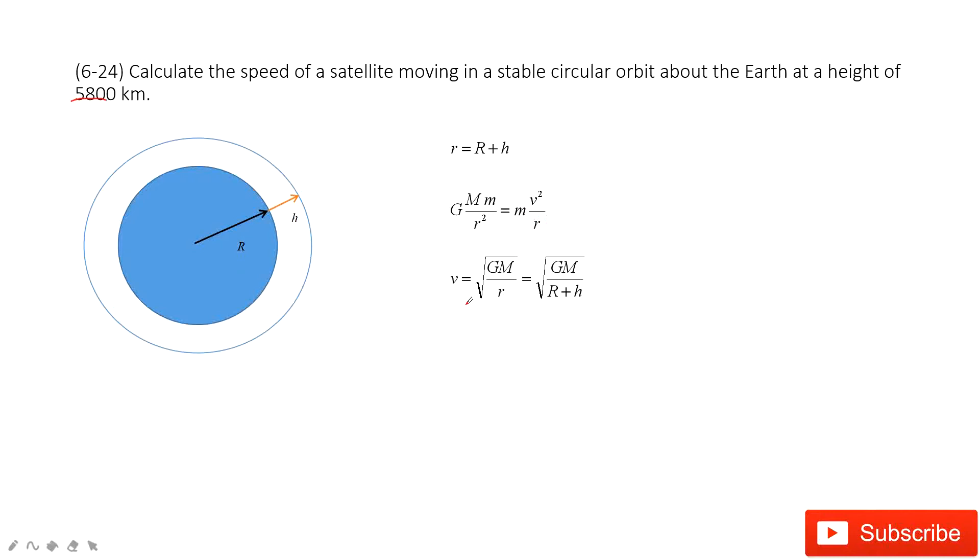In this way, we can find the speed: v is square root of GM divided by r. Consider this is the radius for this circular motion, the radius of the earth plus the distance h.